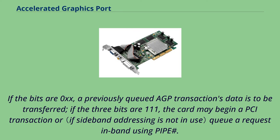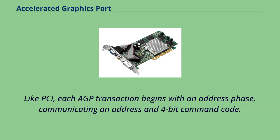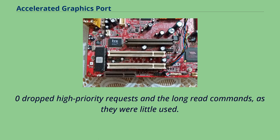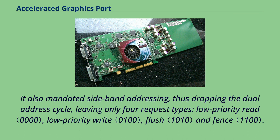Like PCI, each AGP transaction begins with an address phase, communicating an address and 4-bit command code. The possible commands are different from PCI, however. AGP 3.0 dropped high-priority requests and the long-read commands, as they were little used. It also mandated side-band addressing, thus dropping the dual-address cycle, leaving only four request types: low-priority read, low-priority write, flush, and fence.